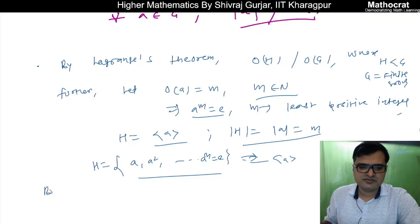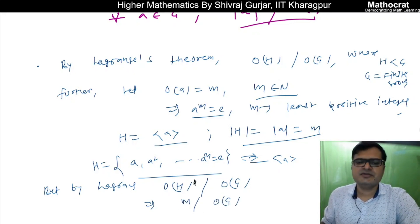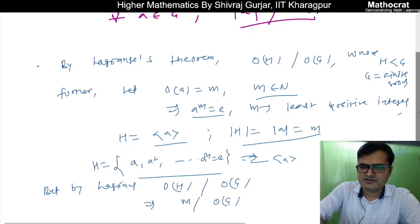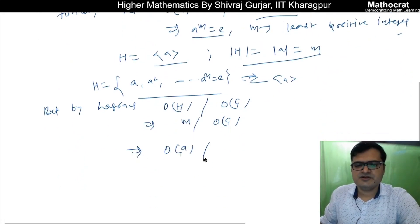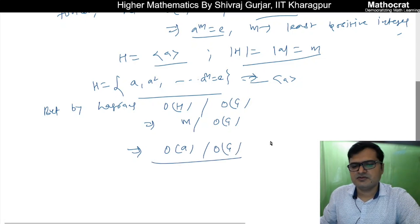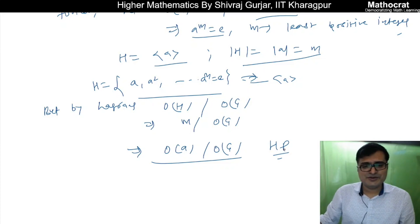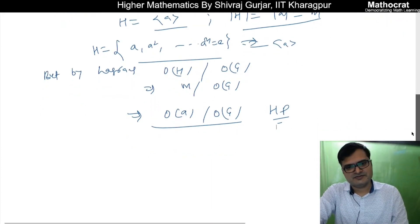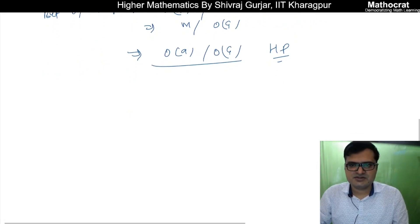This is H, so of course this is nothing but cyclic group generated by a. But by Lagrange's theorem, order of H divides order of G. This means M divides order of G.